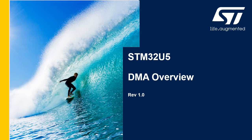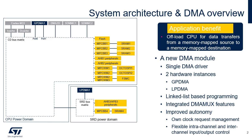Welcome to this overview of GPDMA and LPDMA controllers embedded in the STM32U5. The STM32U5 embeds two new DMA controller modules: the General Purpose DMA or GPDMA, and the Low Power DMA or LPDMA. The GPDMA belongs to the CPU power domain and supports the Low Power Background Autonomous Mode or LP BAM in Stop 0 and Stop 1 modes.